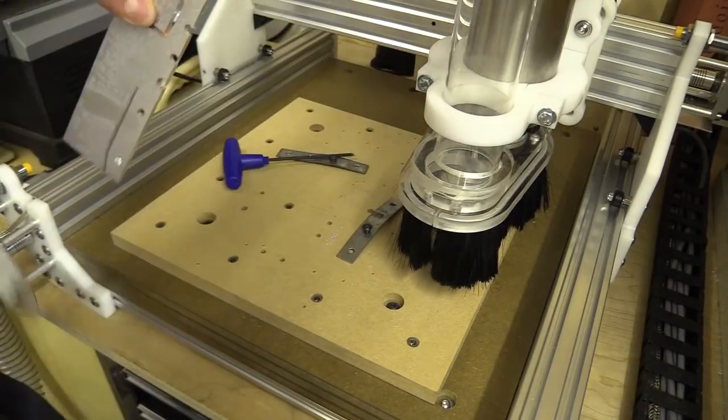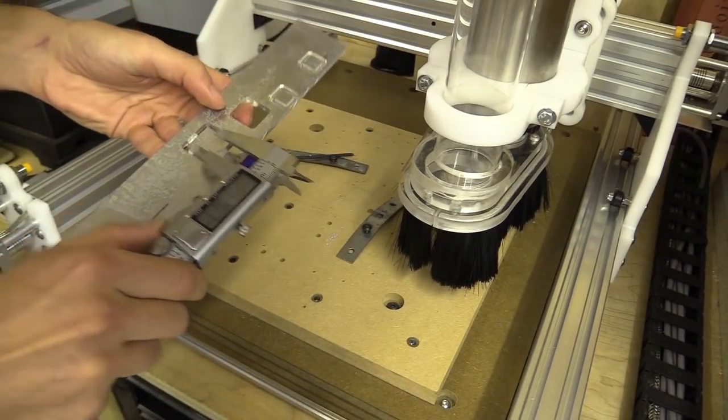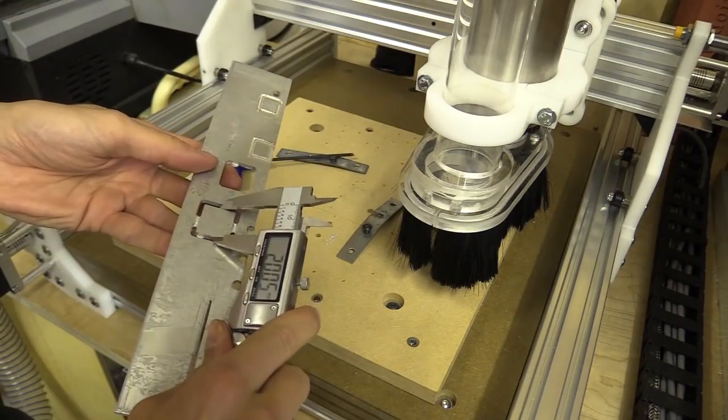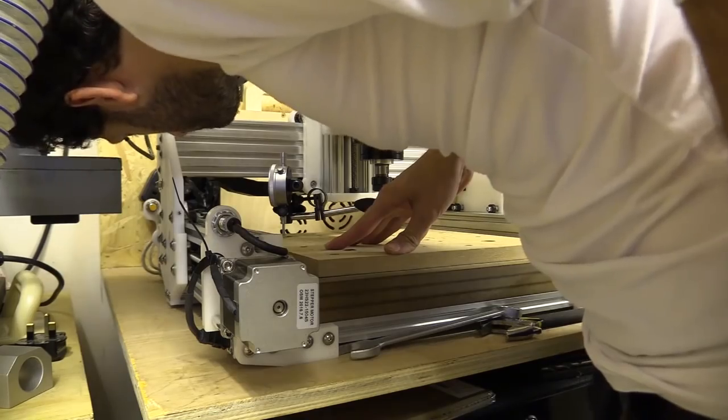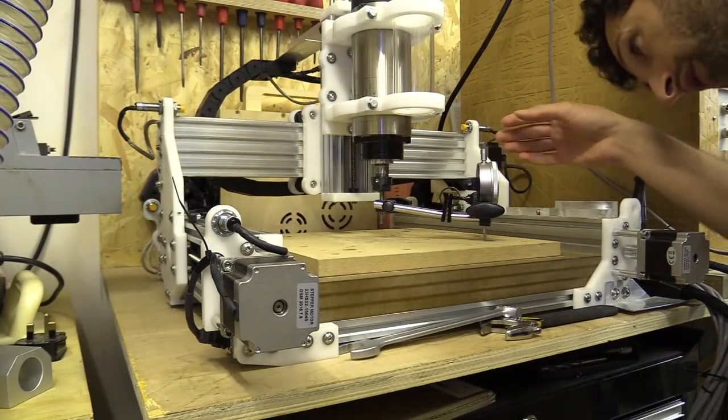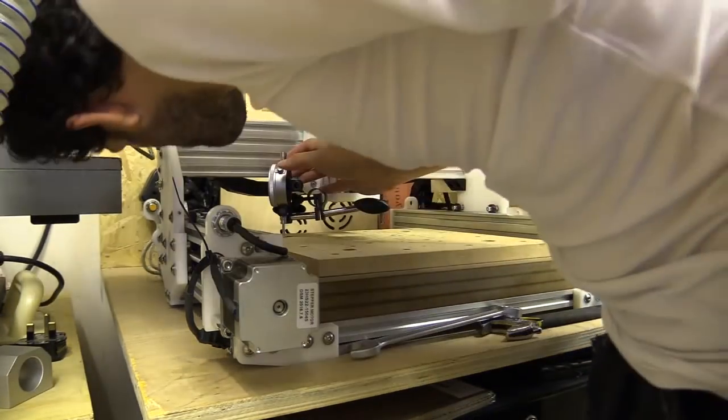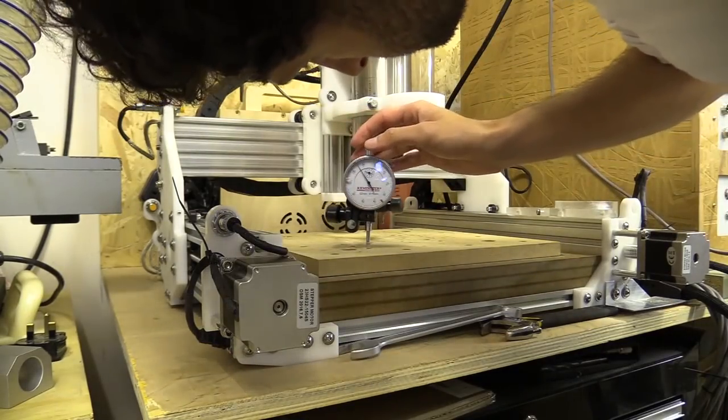In the previous video I tested the CNC machine with the new acetyl plates by milling some aluminum and tramming the spindle so it could move square to the waste board. The process of tramming got me thinking about how I could design some kind of mechanism to fine adjust the orientation of the spindle along the x and y axis to make the process a lot easier.